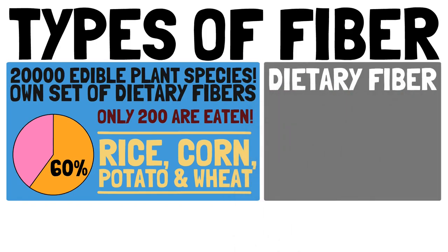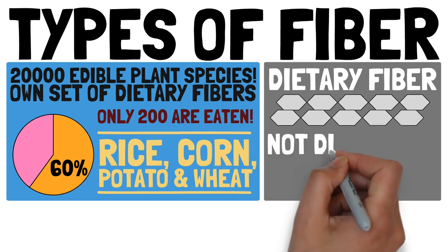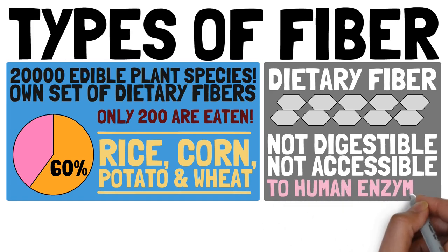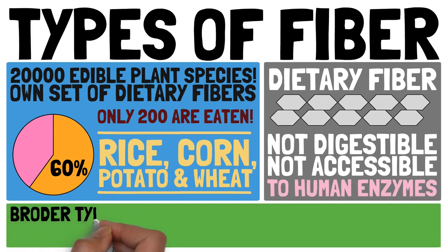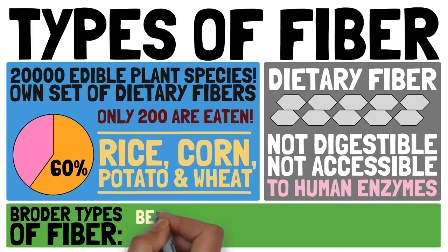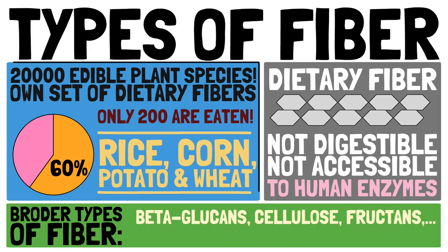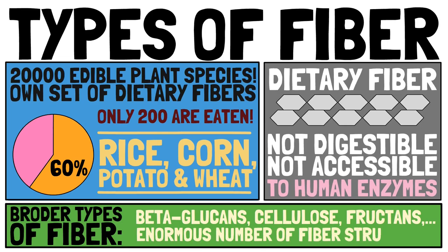Dietary fiber is a structure of smaller carbohydrate units of varying complexity that cannot be digested by, or are inaccessible to, human digestive enzymes. There are quite a few broader types of dietary fiber, like beta-glucans, cellulose, fructans, etc. But it is important to understand that each of these types describes an enormous number of different fiber structures.